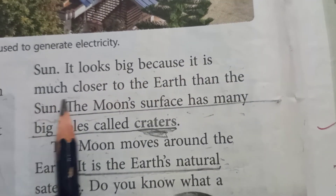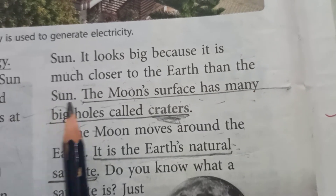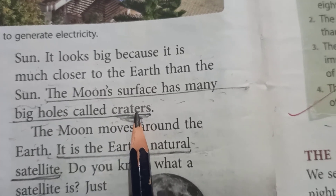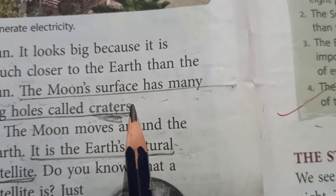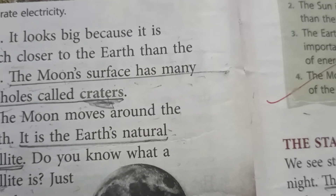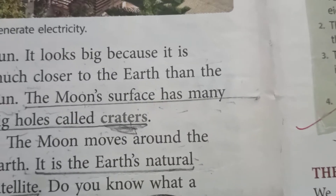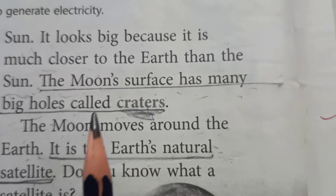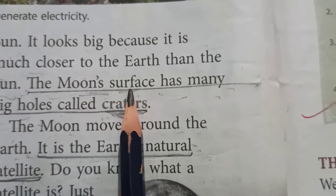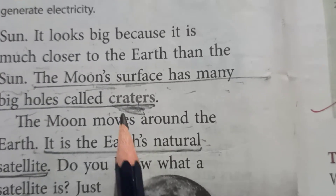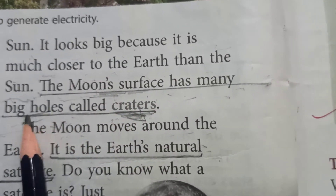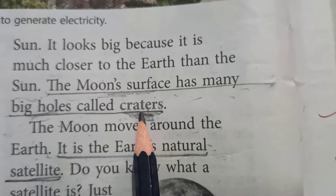It looks big because it is much closer to the earth than the sun. And the moon's surface has many big holes called craters. In the same way, Earth also has big holes and different landforms. Those big holes on the moon's surface are known as craters.